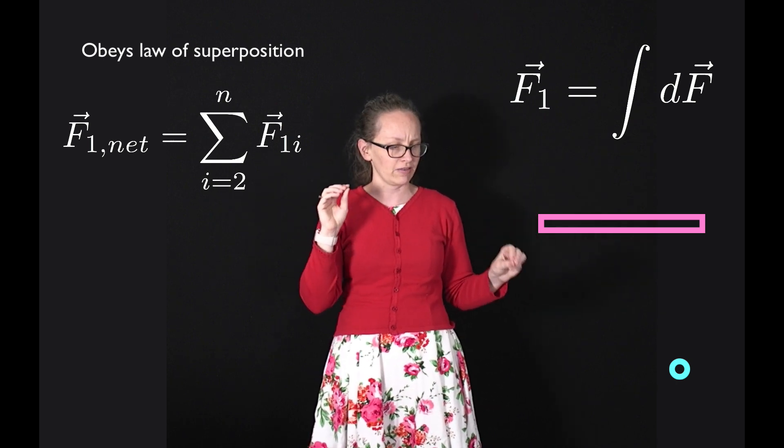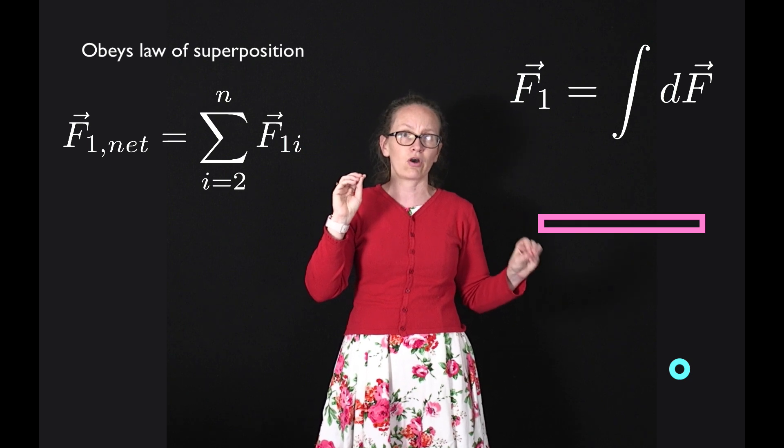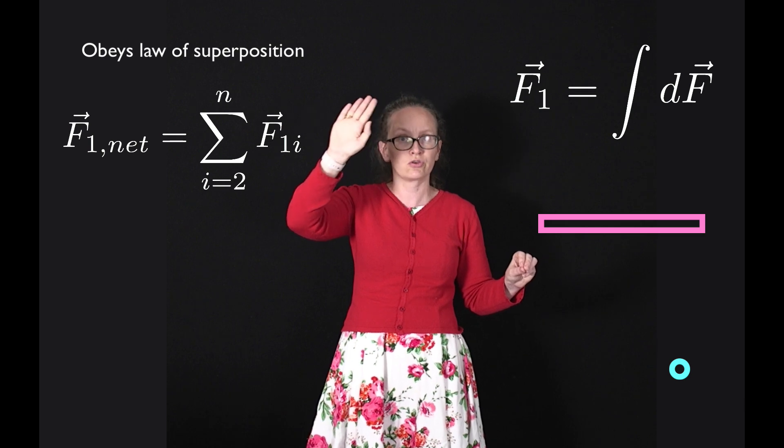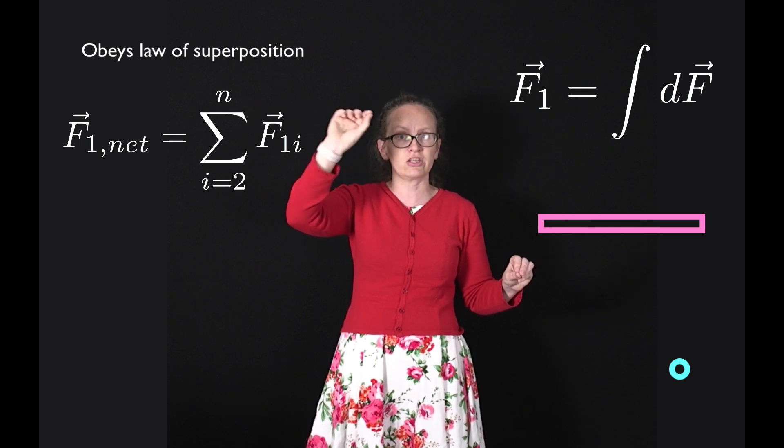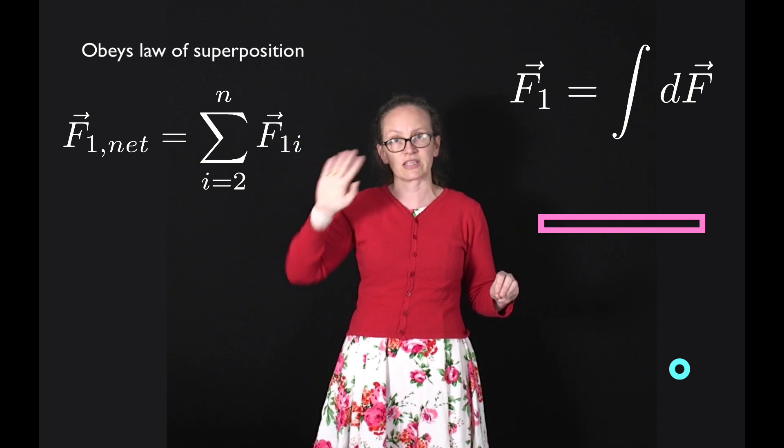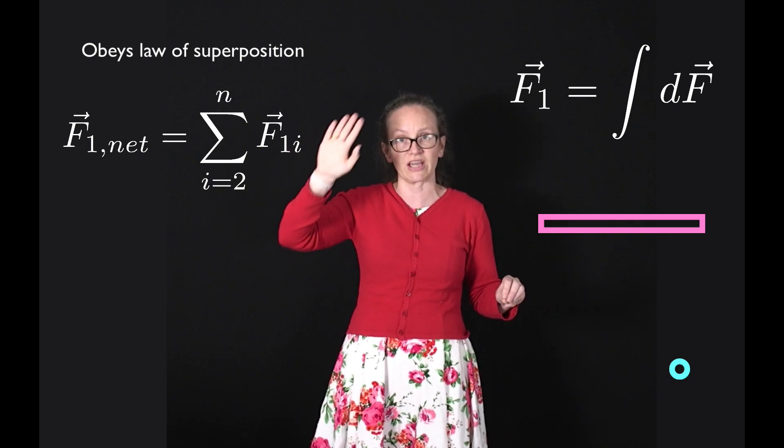To calculate the force on our discrete particle over here, we just integrate over the contributions to that gravitational force from each of the little increments of mass in the continuous massive object.